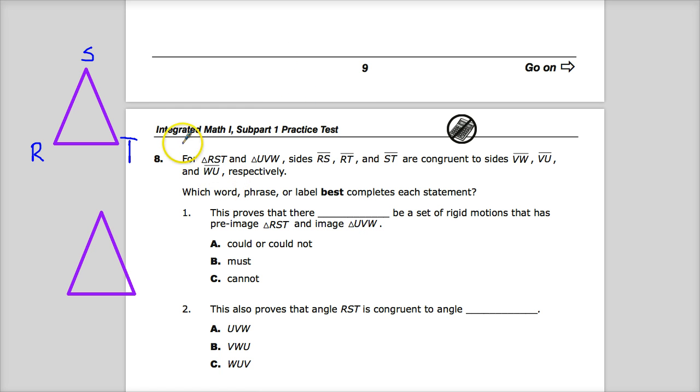So the question says for triangle RST and triangle UVW, sides RS, RT, and ST are congruent to sides VW, VU, and WU, respectively.